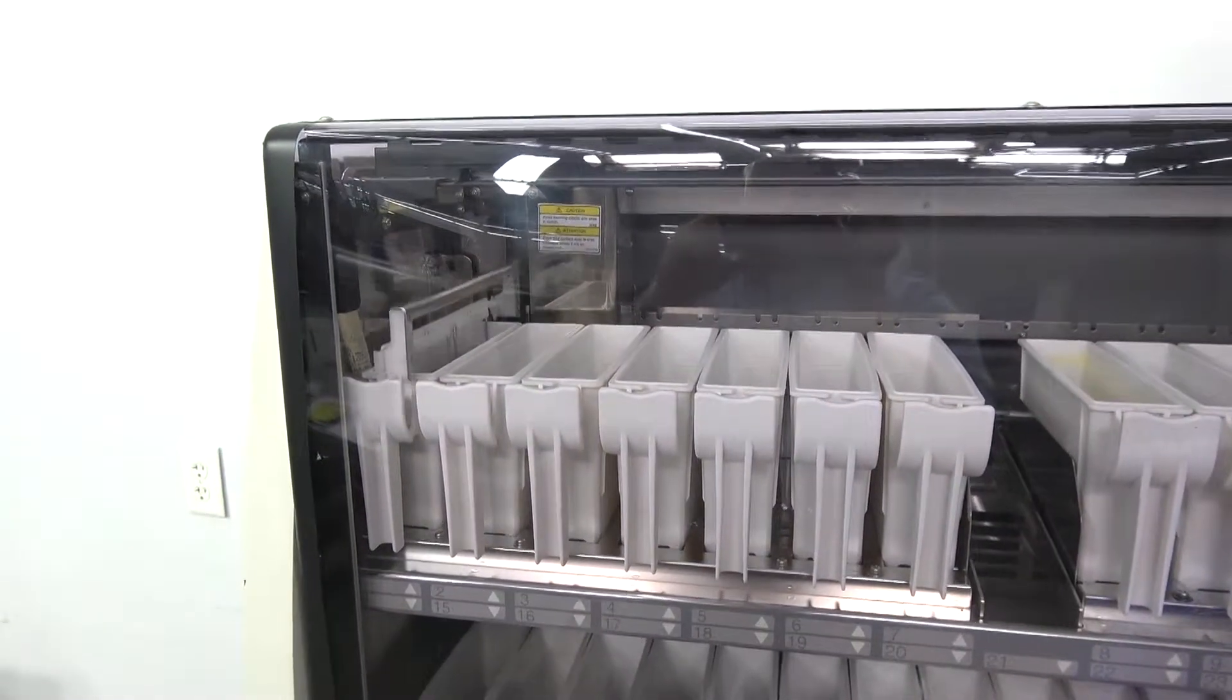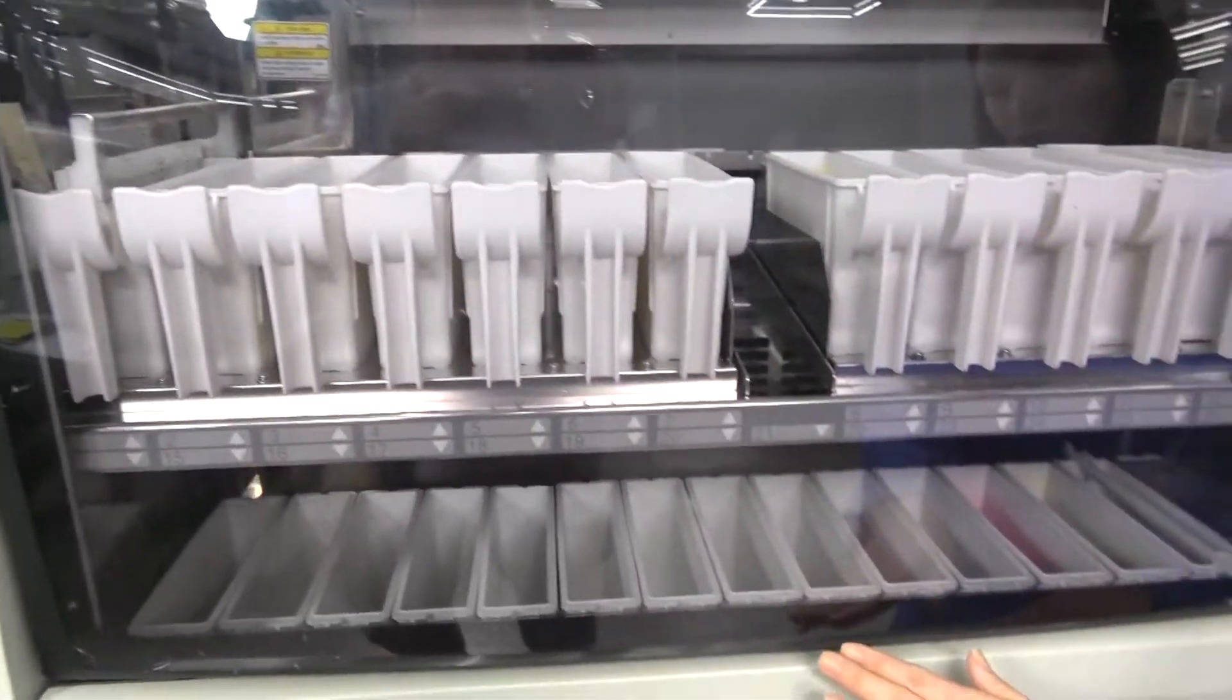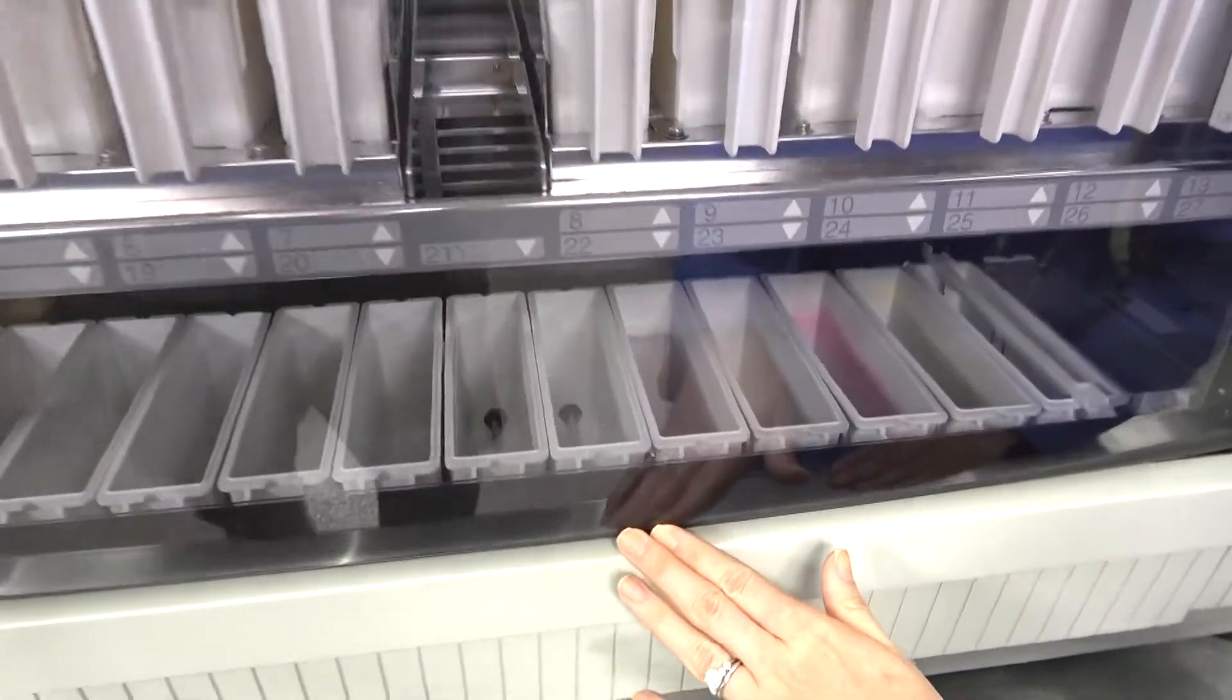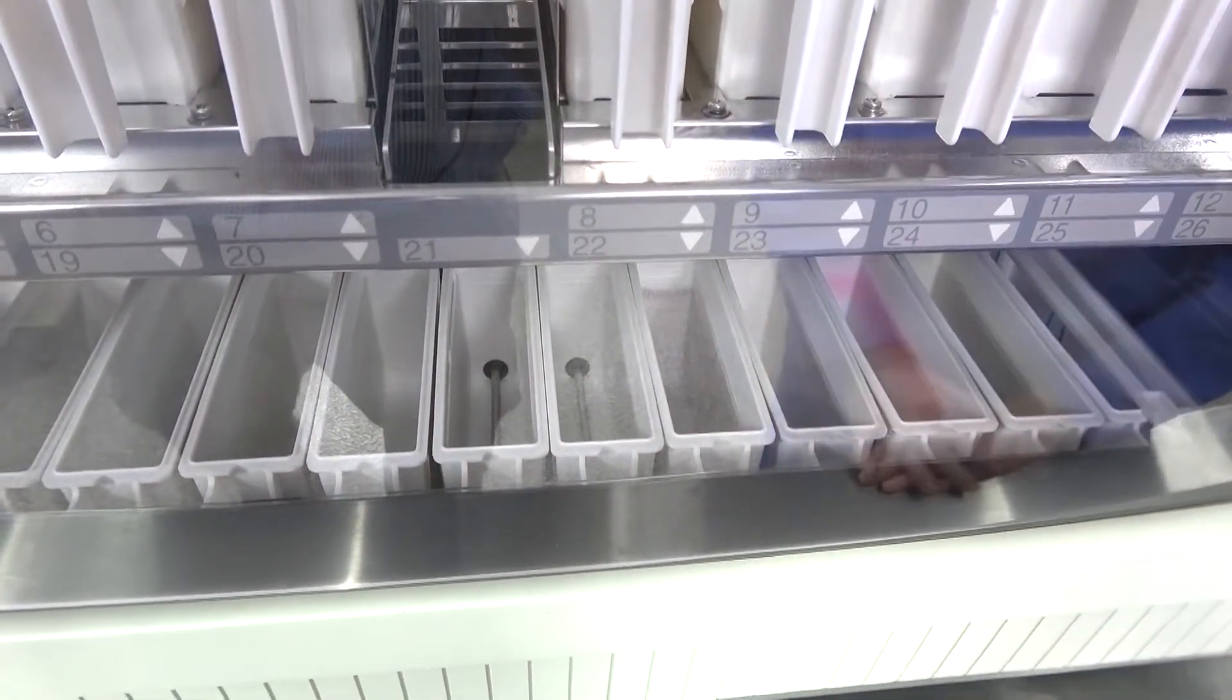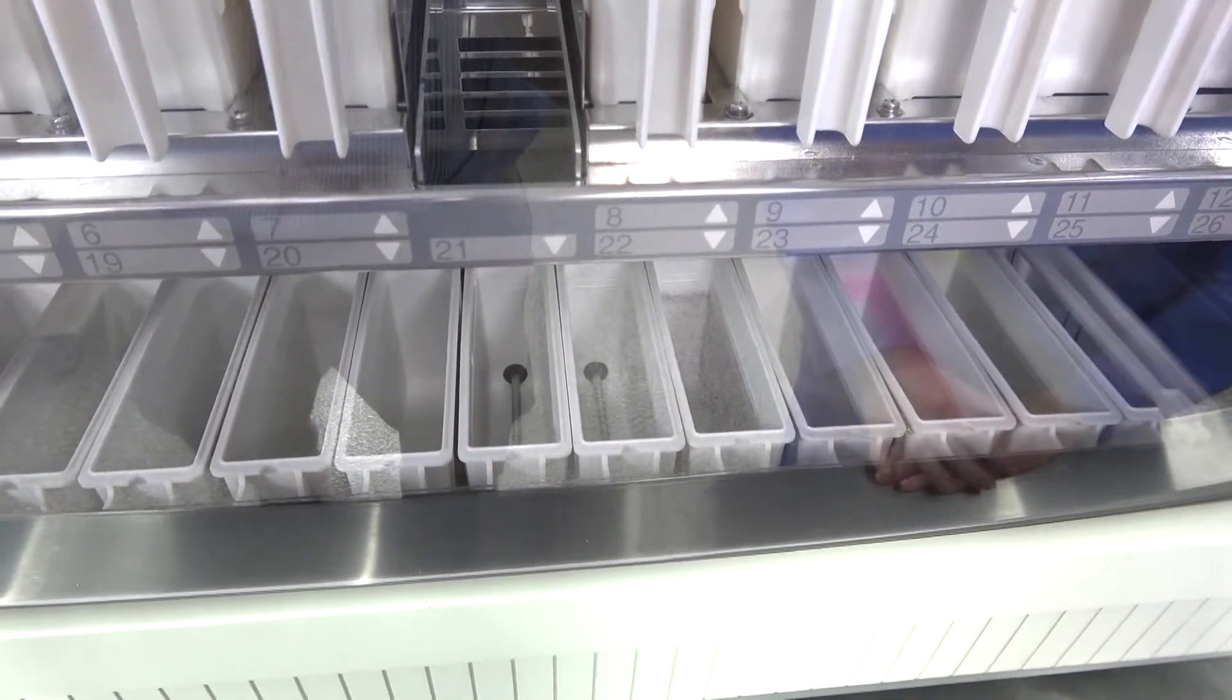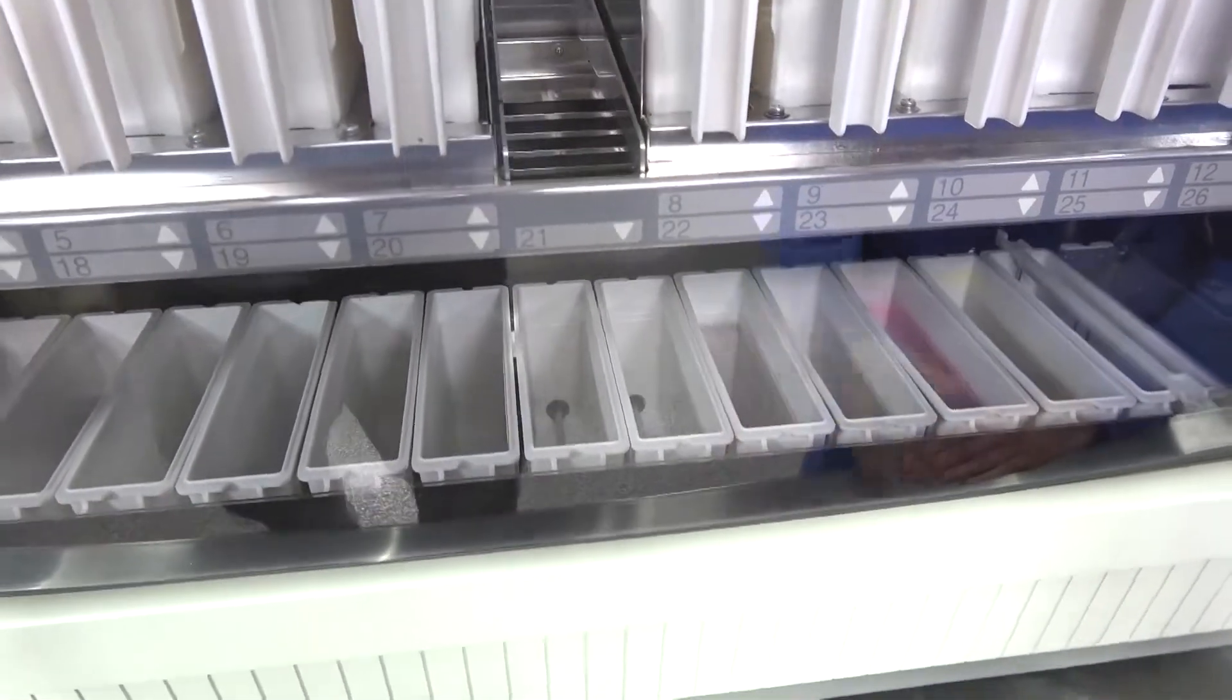So as you'll notice here down at the bottom there are two wash buckets that are hooked up. Now these automatically fill with water. You can see in the back there the lines hooked up so the water can fill automatically.